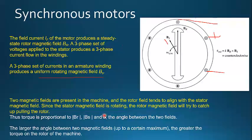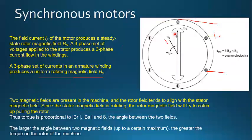Synchronous motors have the same construction as synchronous alternators that we discussed already. We have two main parts: the stator and the rotor — the rotating part. The rotor contains the field windings and the stator contains the armature windings. A synchronous motor is a doubly excited device, meaning we excite the field windings and the stator windings separately.